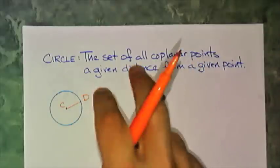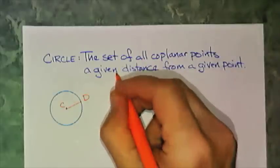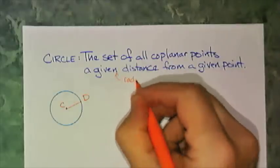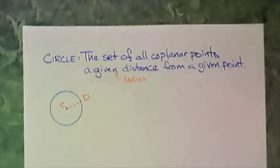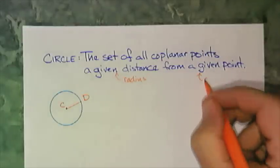Given distance. That given distance from a given point. That given distance is also known as a radius. The given point is known as the center.